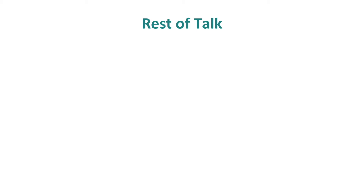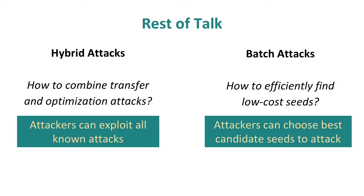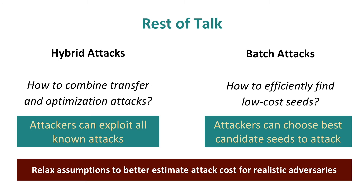The rest of my talk is composed of two parts. First, I'll talk about how to combine the transfer and optimization attacks. Then I'll talk about how we can find the low cost images. The hybrid batch attack shows that we need to relax our assumptions made on realistic adversaries so that we can better estimate their actual cost.